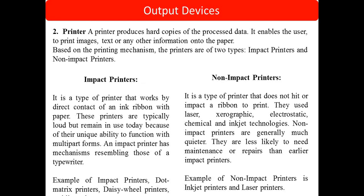An impact printer is a type of printer that works by direct contact of an ink ribbon with paper — the ribbon is directly pressed against the paper. These printers are typically loud but remain in use today because of their unique ability to function with multi-part forms. Impact printers have a mechanism resembling that of a typewriter; when you press a key, the striker prints the corresponding character on the paper. Examples of impact printers are dot matrix printers, daisy wheel printers, and line printers.